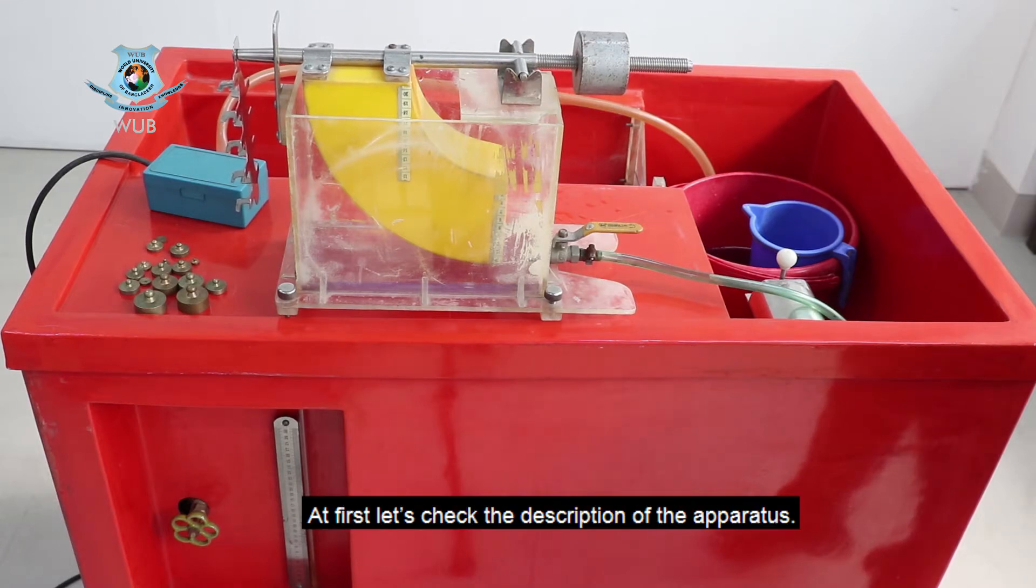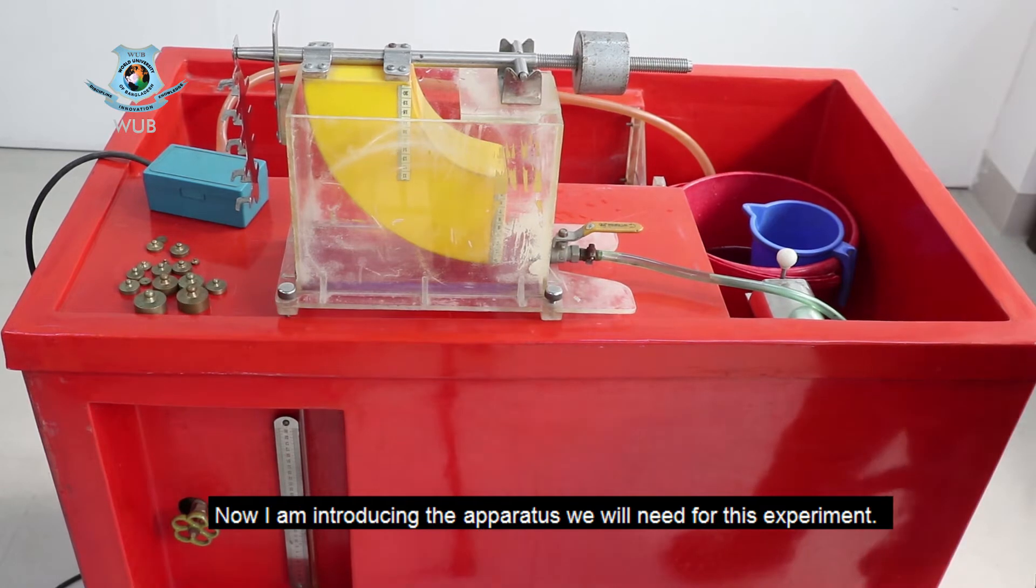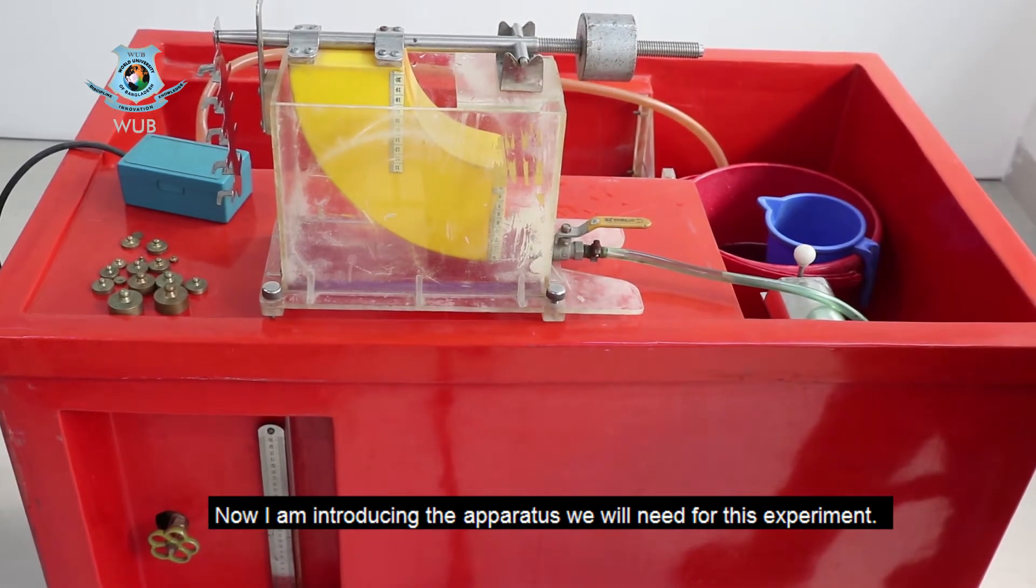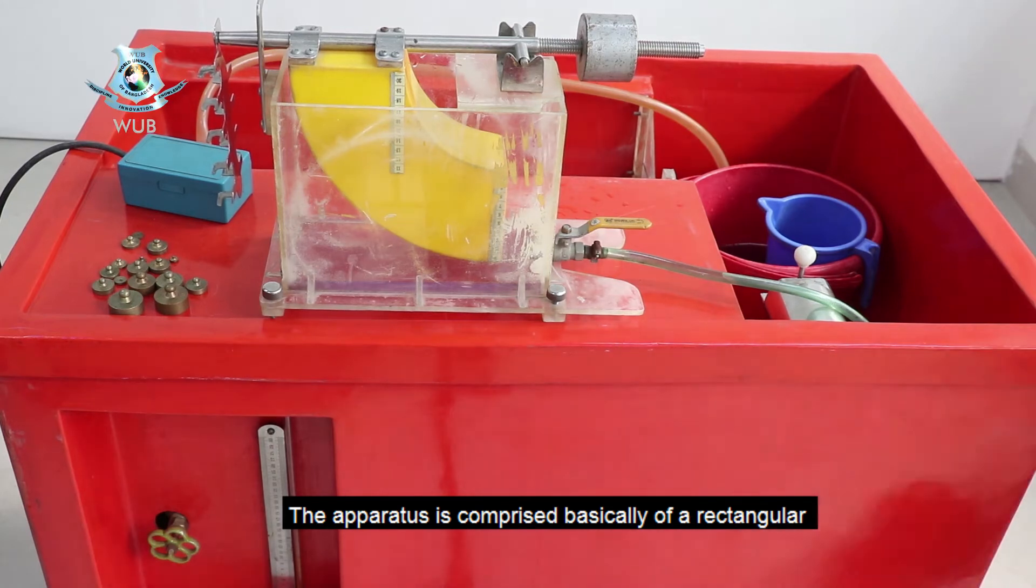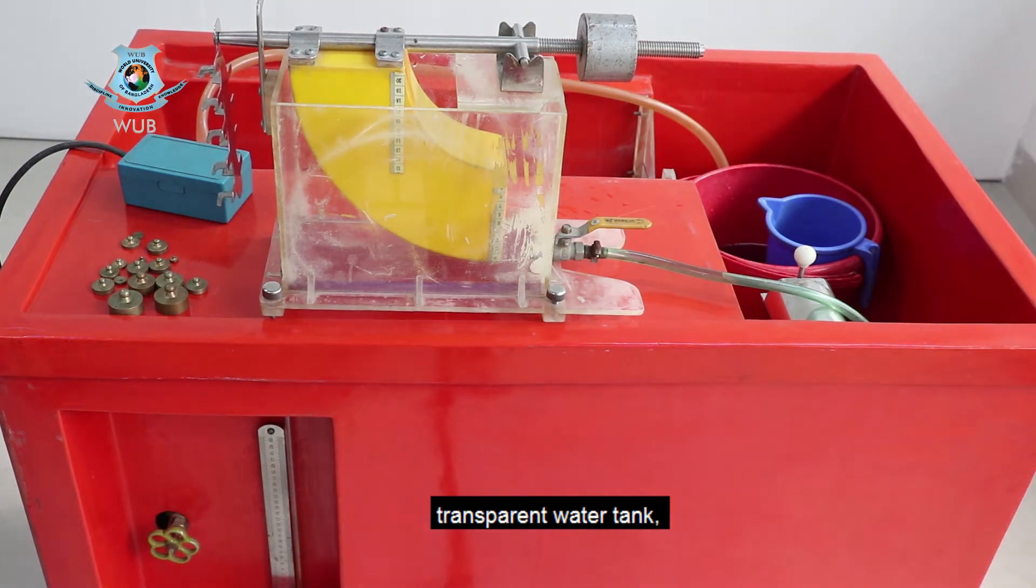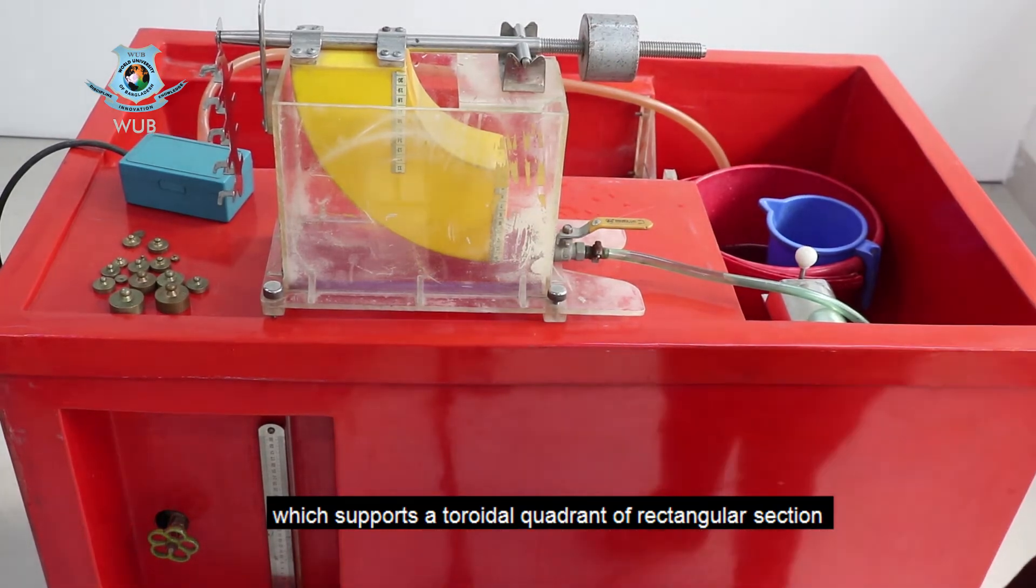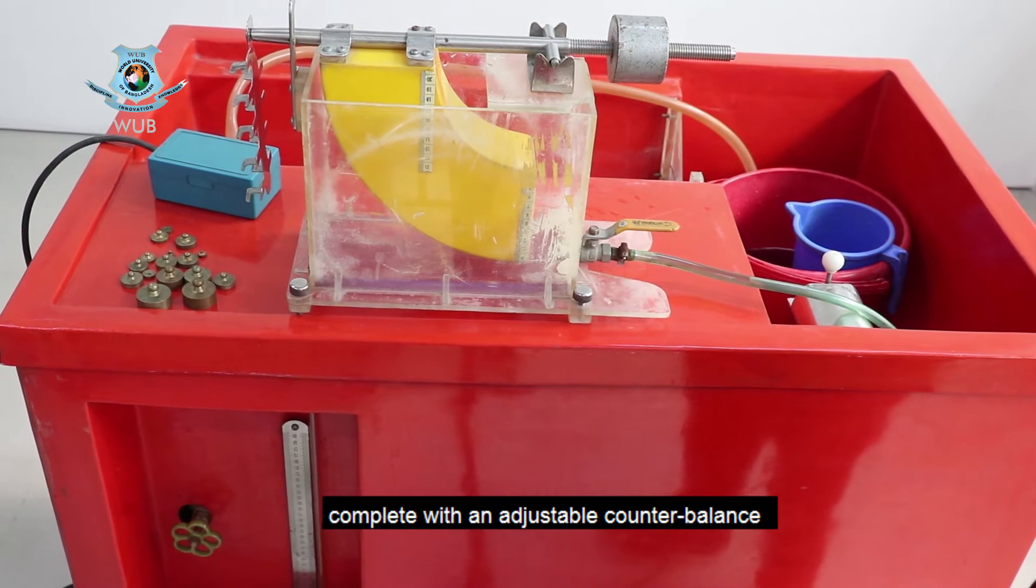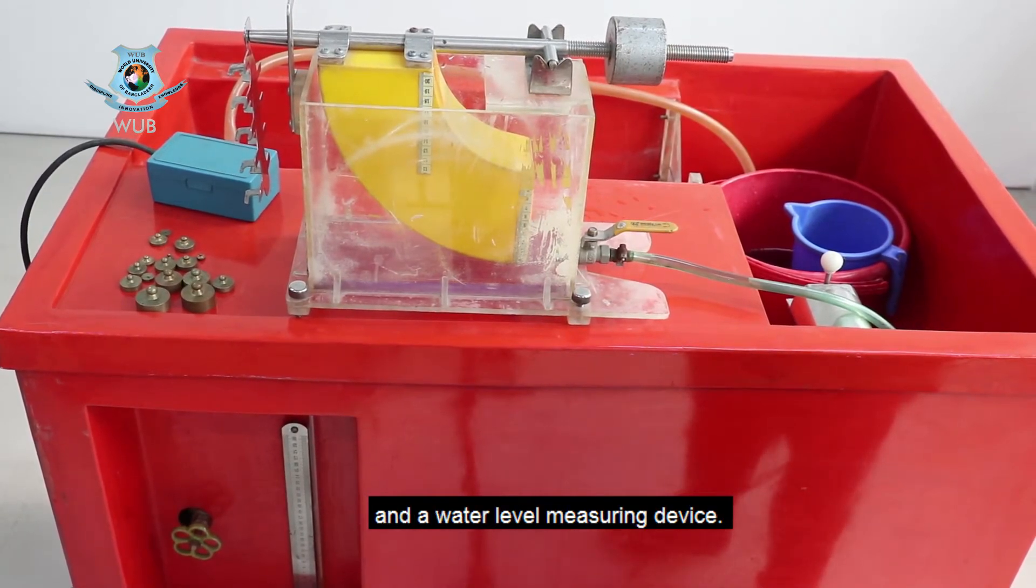At first let's check the description of the apparatus. The apparatus is comprised basically of a rectangular transparent water tank which supports a toroidal quadrant of rectangular section, complete with an adjustable counterbalance and a water level measuring device.